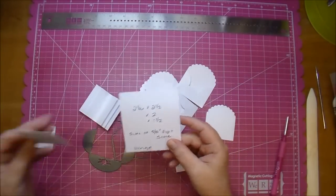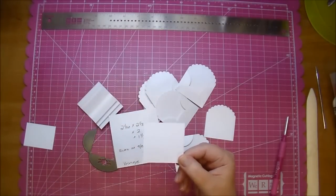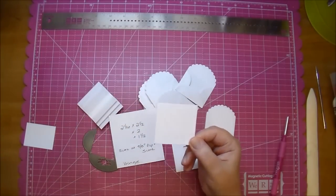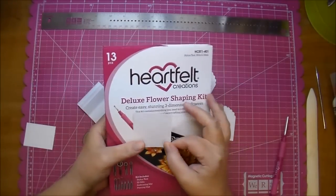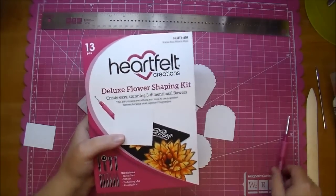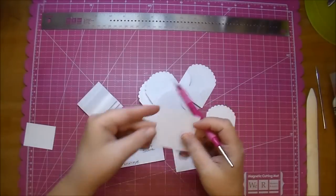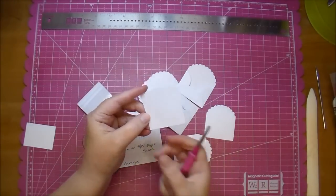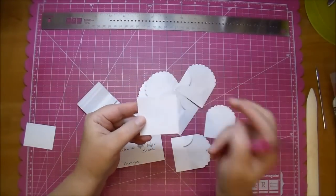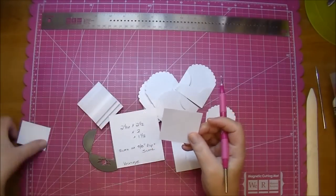Then what I did is I put the piece of paper in my scoreboard. I used my Martha Stewart scoreboard. I have a fast play video of how I did this so you'll be able to see that. And I used my Deluxe Flower Shaping Kit from Heartfelt Creations and my stylus. I scored it at five-eighths inch, turned it completely around 180 degrees, and scored it at five-eighths of an inch. I did that with all three pieces.